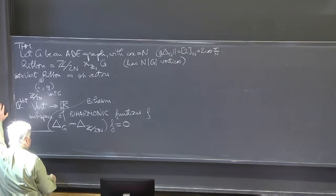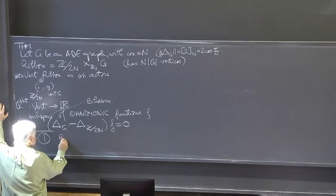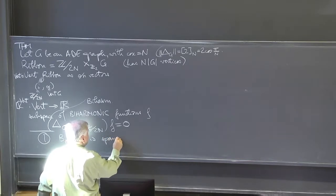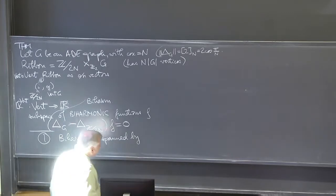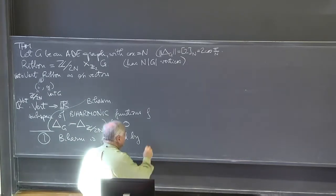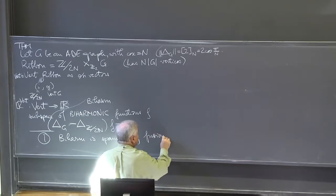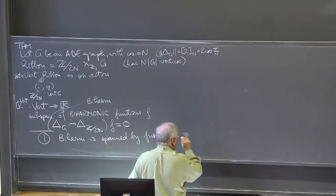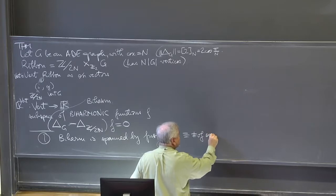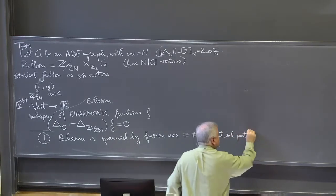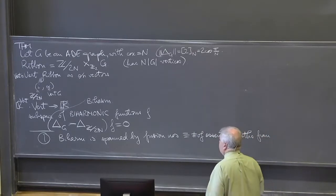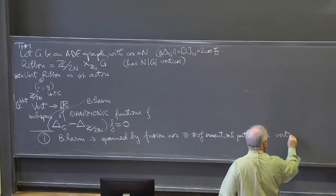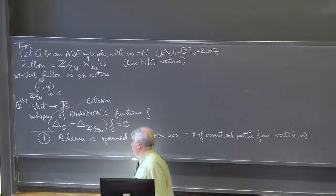What we want to show now is: one, the subspace of bi-harmonic functions is spanned by the fusion numbers, which are the same as numbers of essential paths — the bi-harmonic functions from vertices i-alpha.